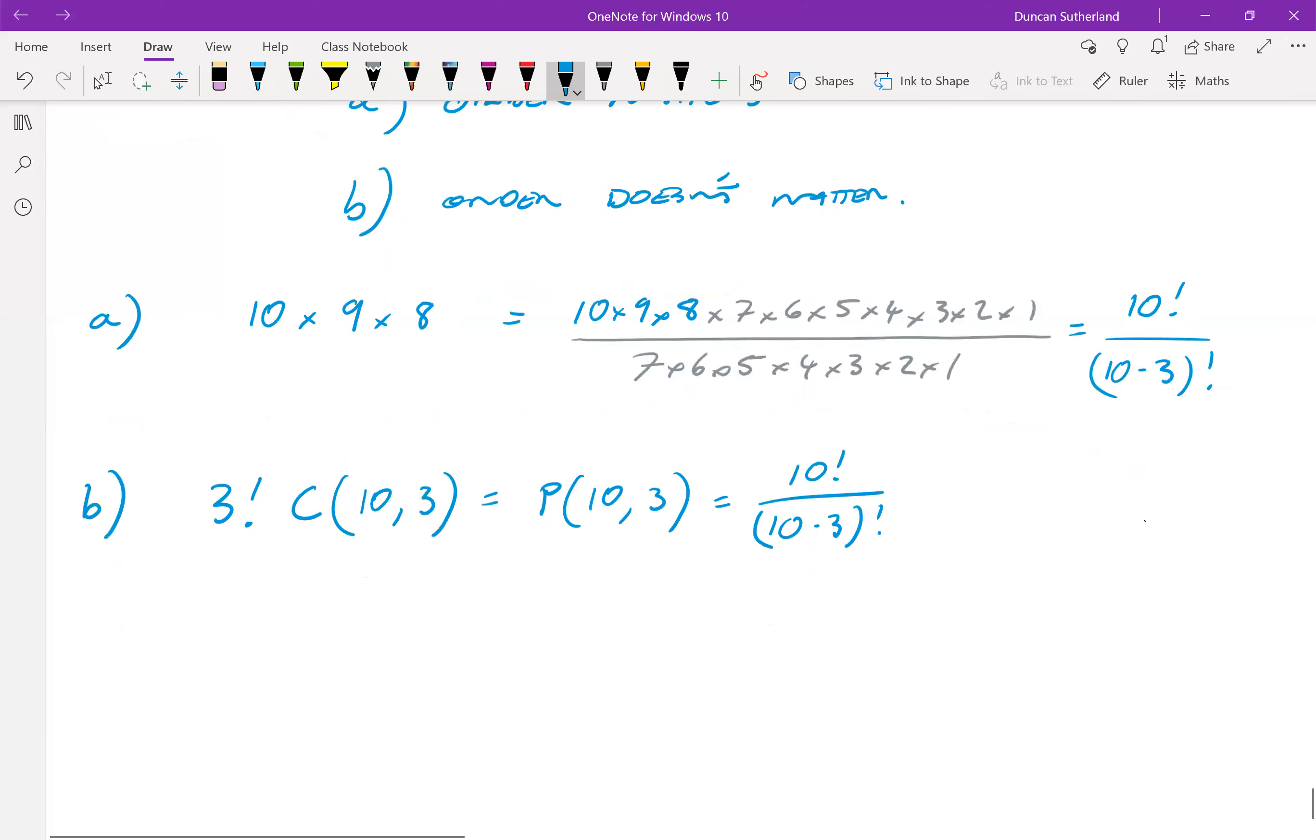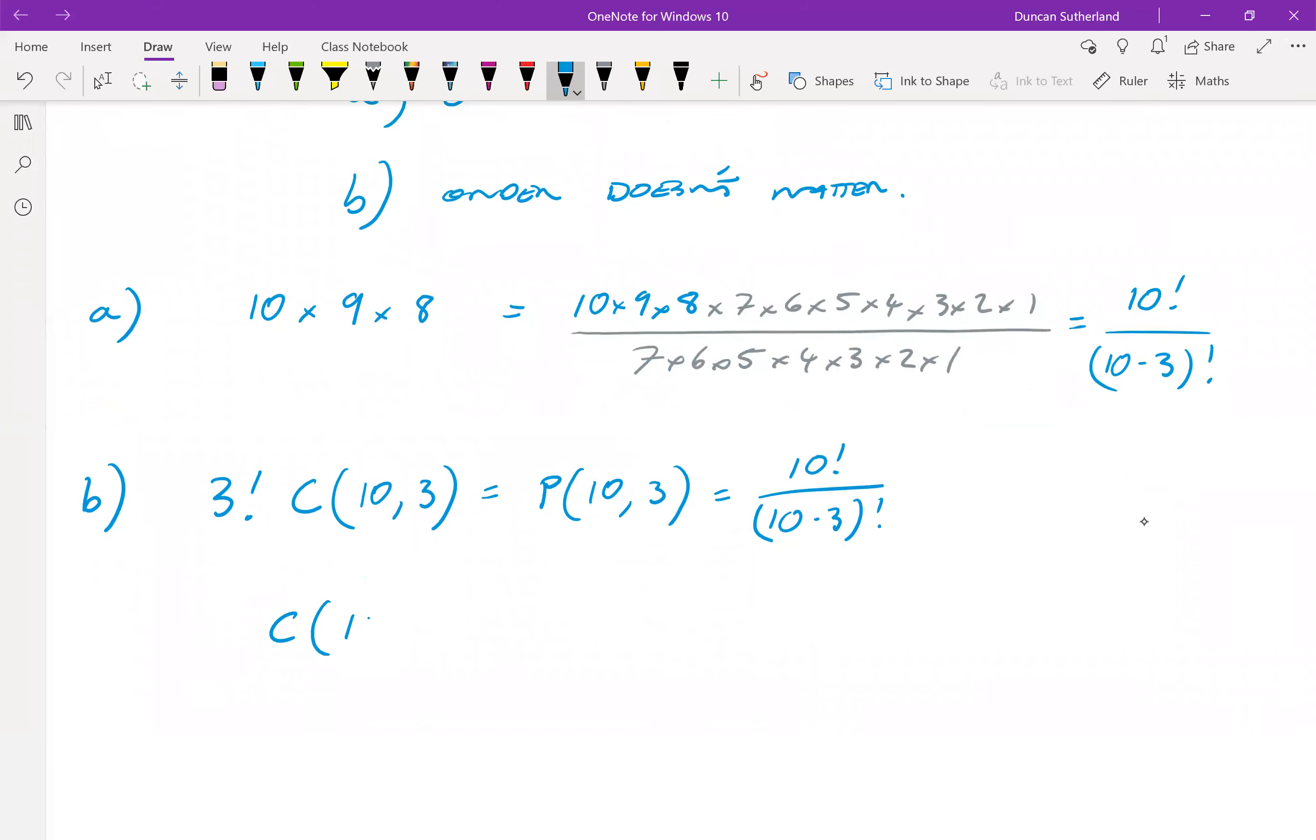So the number of combinations, so 10 choose 3 if you like, is 10 factorial over 3 factorial times 10 minus 3 factorial.